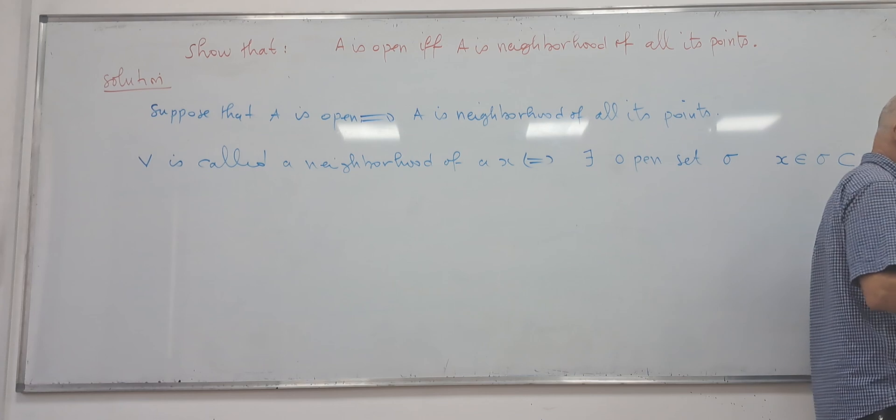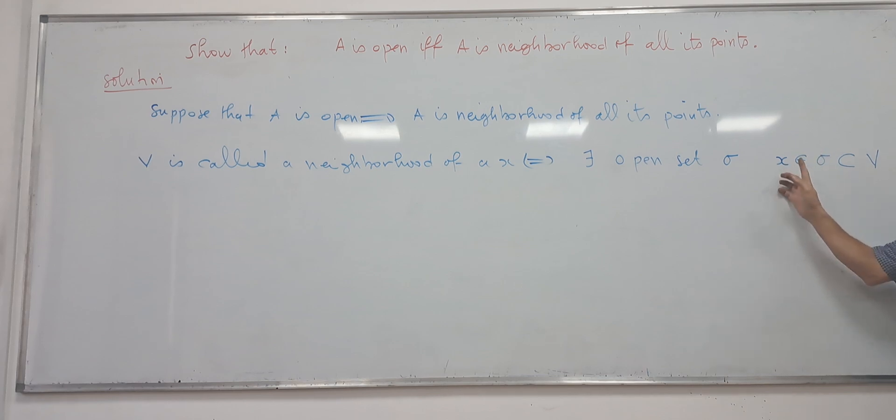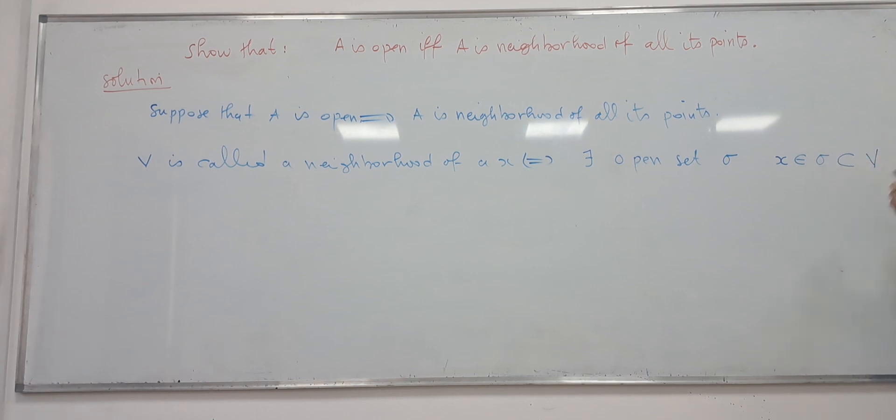So a set which is not necessarily open is called a neighbor of a point X if we can find an open set such that X is contained in the open and the open is contained in the set. So this set is called a neighbor.